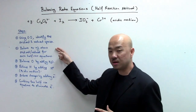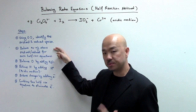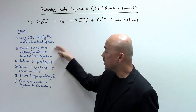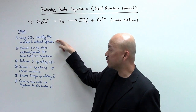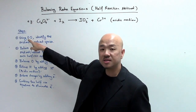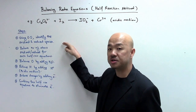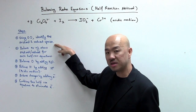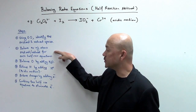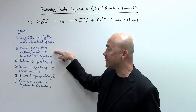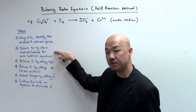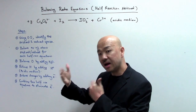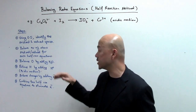Looking at the board, we'll first go through the steps or the procedures to do the half reaction method. Step 1 is to use the OS — the oxidation state, sometimes we call it oxidation numbers — to identify the oxidized and reduced species in the question. Next, we're going to balance the number of atoms that is oxidized or reduced for each of the half reaction equations. One is the oxidation half, the other one is the reduction half equation.